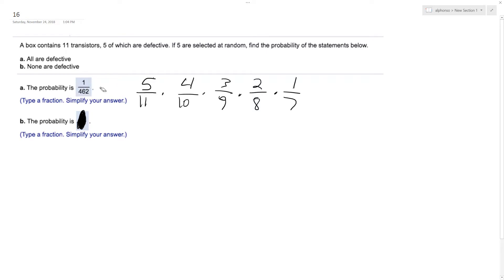All right, so the probability that none are defective. So this is going to be the opposite of that. So instead of 5/11, it's going to be 6/11. But same thing.